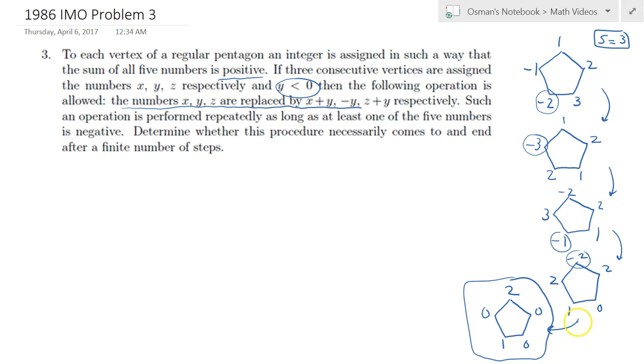We are able to terminate our procedure when there's no more negative numbers remaining on the vertices of our pentagon. Is it just pure luck, or does this procedure always come to an end after a finite number of steps? That's the problem. In this particular example, it worked out pretty smoothly after just four steps. So our first observation is: